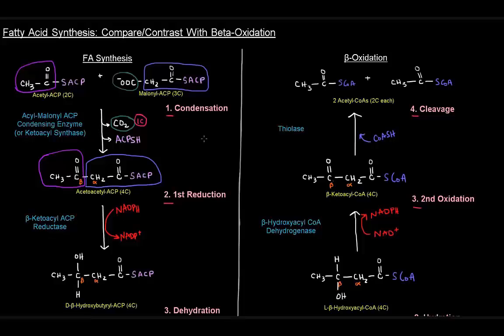Also pay attention to—instead of having two acetyl-CoAs here, we've got an acetyl-ACP and a malonyl-ACP, versus over here we have two acetyl-CoAs. Here we had a condensing enzyme versus a thiolase to cleave the thioester linkage.